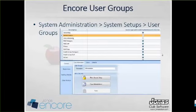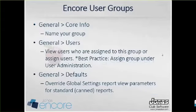To create user groups, go to System Administration, System Setups, User Groups. You can see here we have some samples listed. To create a new group, hit New on your task toolbar and describe that user group in the description field. The general core information is the name of your group in that description field. The users tab will view users who are assigned to this group or allow you to assign users.